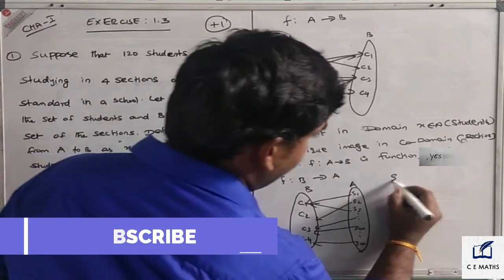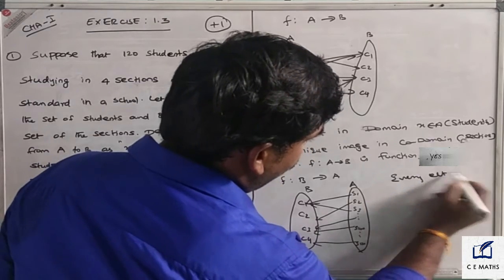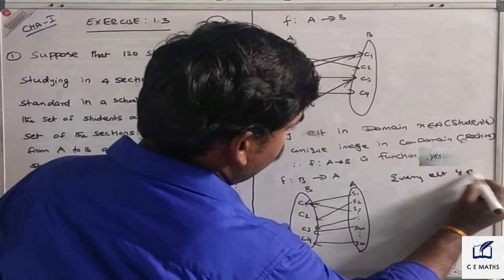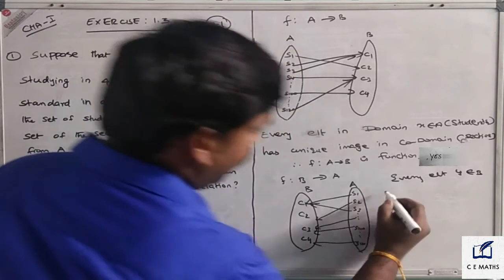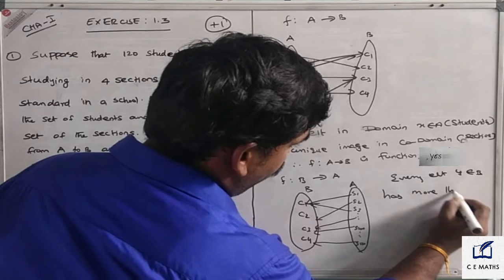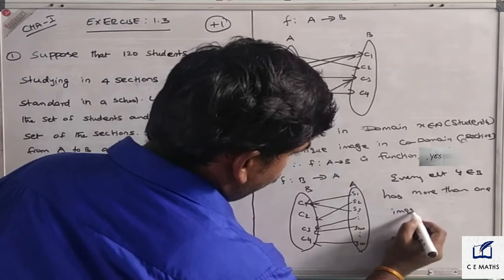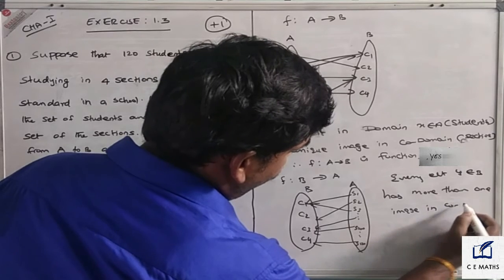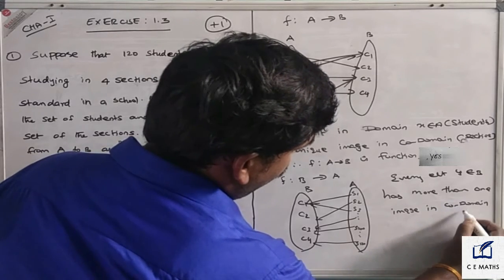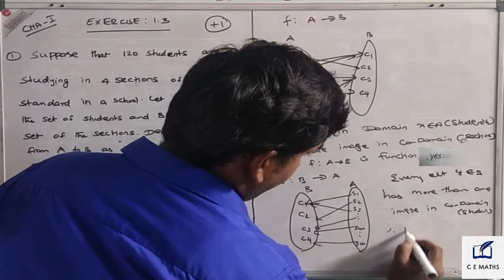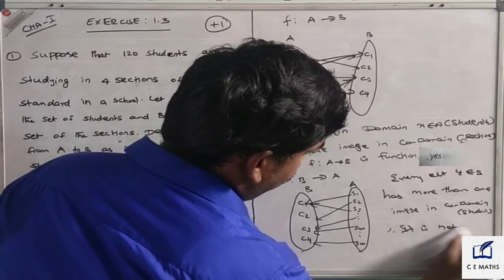Every element in B, which is classes and sections, every class contains more than one student. So it is not a function. Every element Y belongs to B has more than one image in the codomain, which is students. So it is not a function.